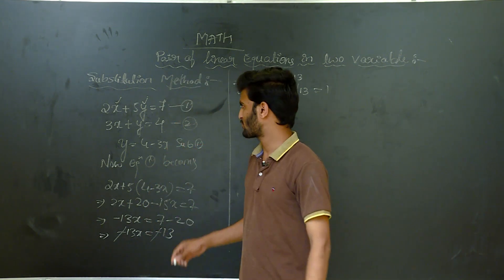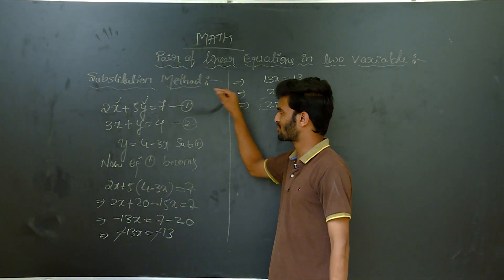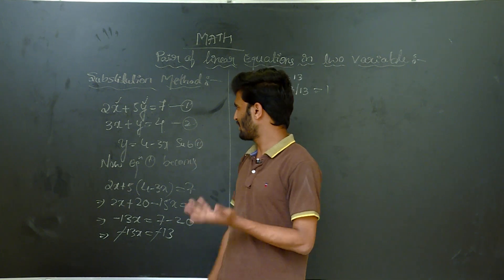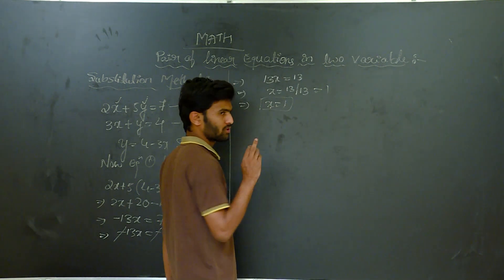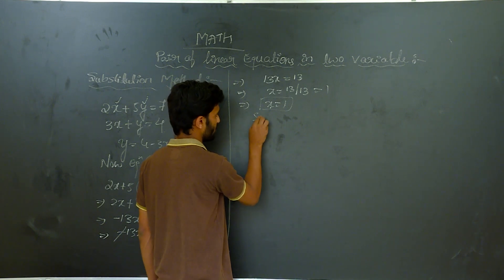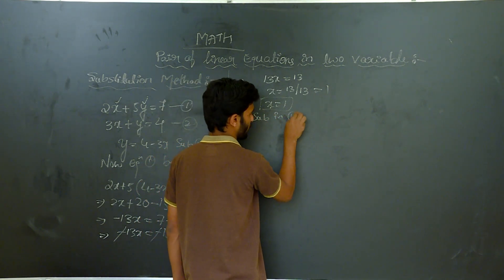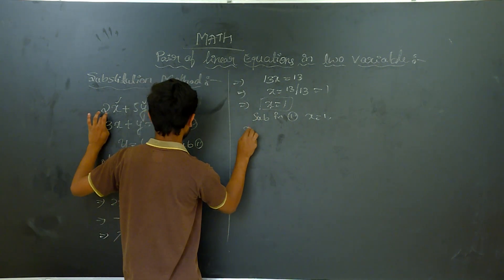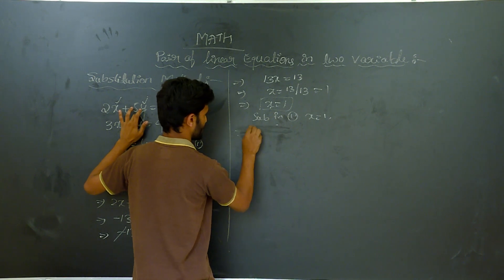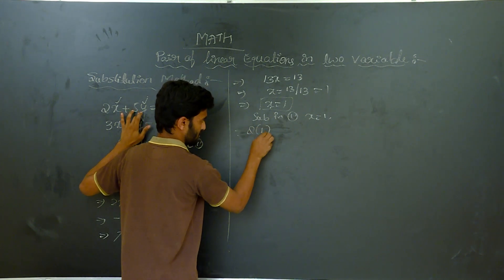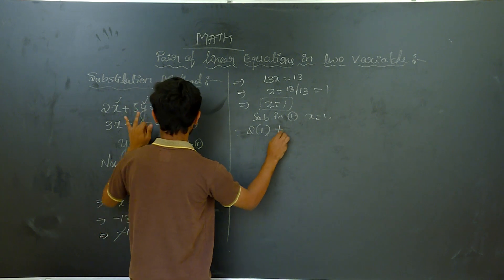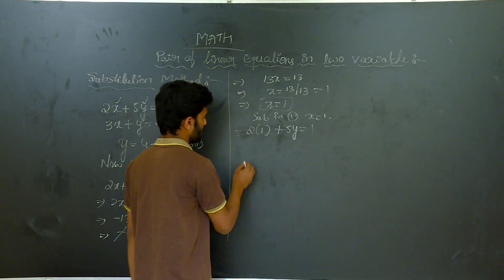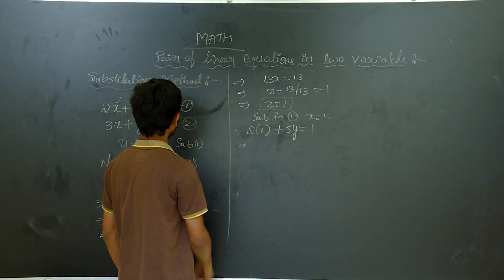Now I will substitute the value of X equal to 1 back into equation 1 or equation 2 — your choice. I will use equation 1. Substituting X equal to 1 into equation 1 gives: 2 into 1 plus 5 into Y which is equal to 7.